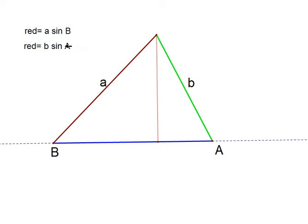We could have rearranged it the other way around. We could have divided to get sine A over a equals sine B over b.